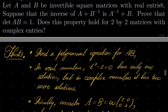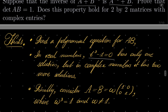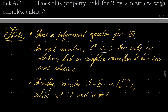Here are my hints for this problem. First, using the fact that this times this equals the identity matrix, find a polynomial equation for a times b. And remember one obvious fact: in real numbers, t cubed minus 1 equals 0 has one and only one solution, but in complex numbers it has two more solutions. For the second part, which is in some ways more interesting, consider a and b to be omega times the identity matrix, where omega is the primitive root of t cubed minus 1 equals 0, so omega cubed is 1 but omega is not 1, in complex numbers.